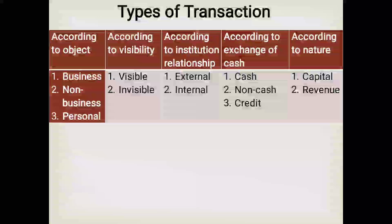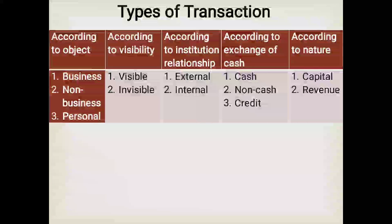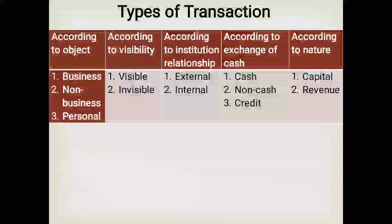Number two, according to visibility: visible transaction and invisible transaction. Number three, according to institution relationship: external transaction and internal transaction. Number four, according to exchange of cash: cash transaction, non-cash transaction, and credit transaction. Number five, according to nature: capital transaction and revenue transaction.